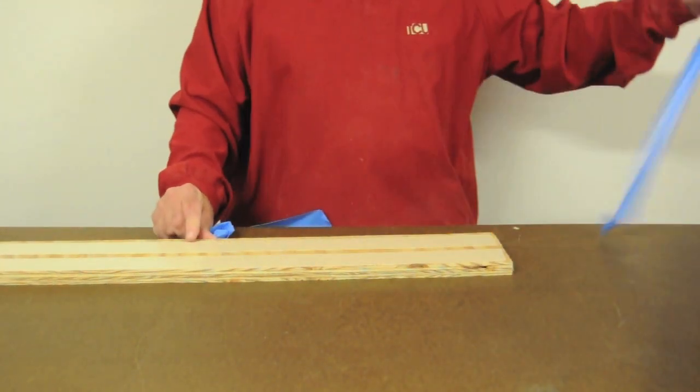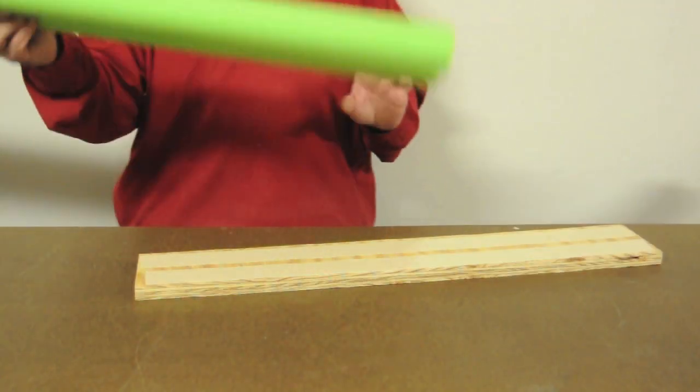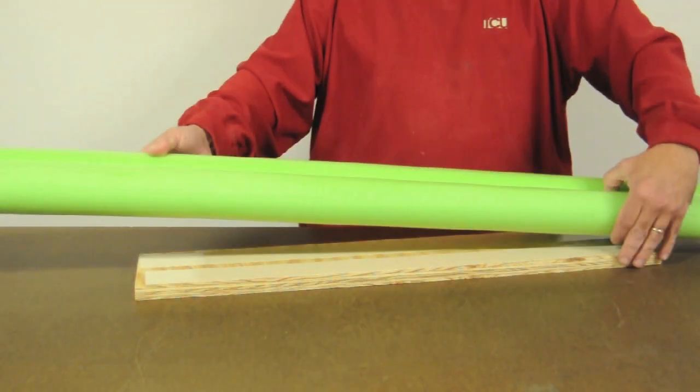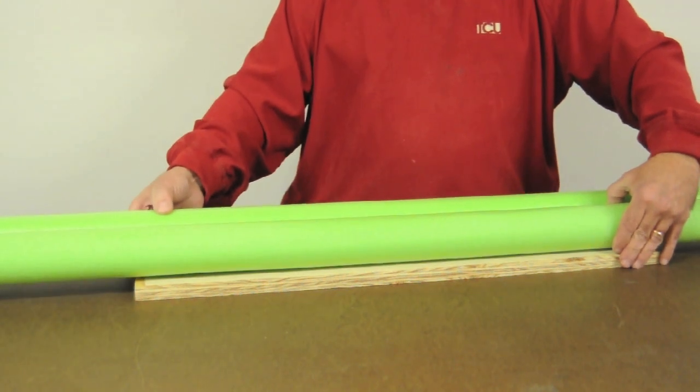Now attach lengths of double-sided tape to each of the boards. You can now attach the foam, and make sure you leave at least a 4 inch overhang on each side for the next step.